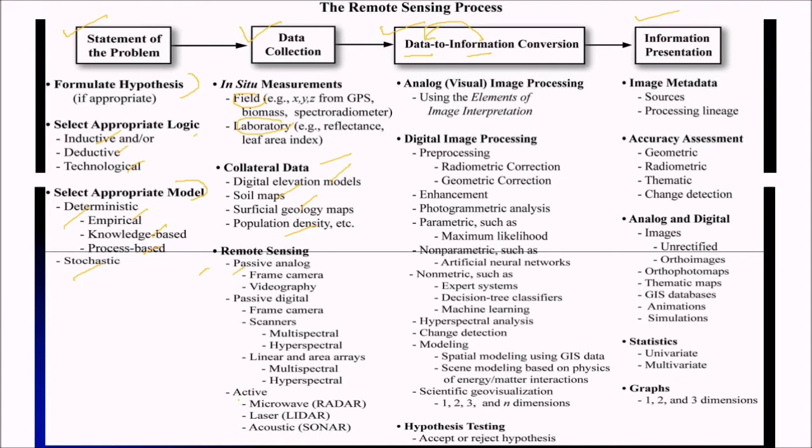And with remote sensing, it can be passive or active. With passive analog, we use frame camera or videography. With passive digital, we use frame camera, scanners and linear and area arrays. In scanners, we have multispectral and hyperspectral scanners. In linear and area arrays, we have multispectral and hyperspectral.